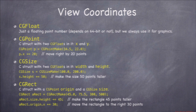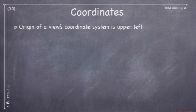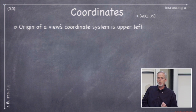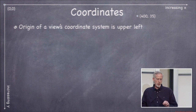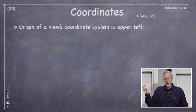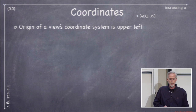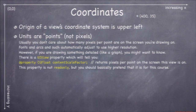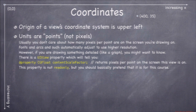The origin of a view's coordinate system for drawing or handling events is upper left — not lower left like Cartesian coordinates. Positive Y values go down the screen. The units in drawing are points, not pixels. Some devices have very high density pixels like retina displays, others don't. If we used pixels, things we drew would be really small on retina displays. We abstract that away by using points.